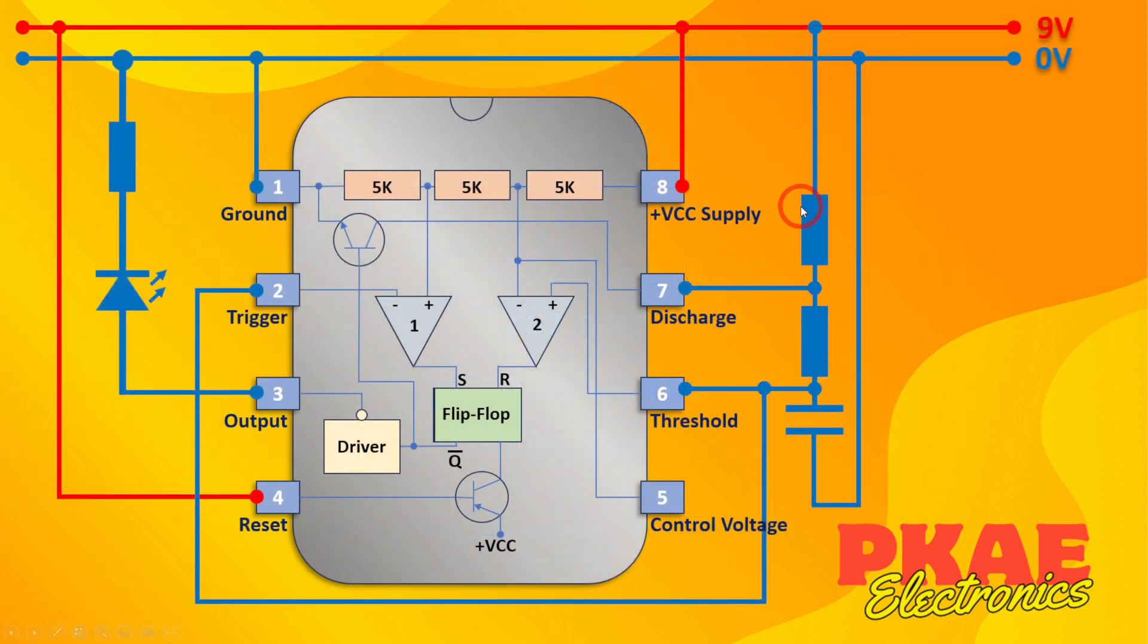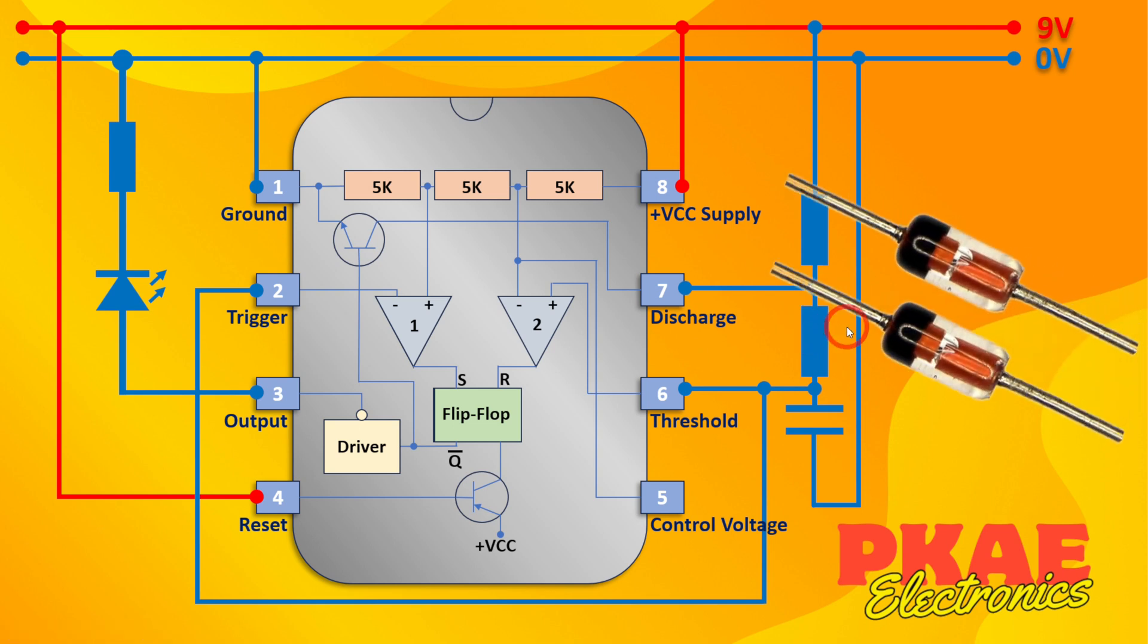What we really need is some device that routes the current through just this resistor when it's charging and just this resistor when it's discharging. What component can we use that allows us to route current? It's diodes of course. The diode will only allow current to pass in one direction.